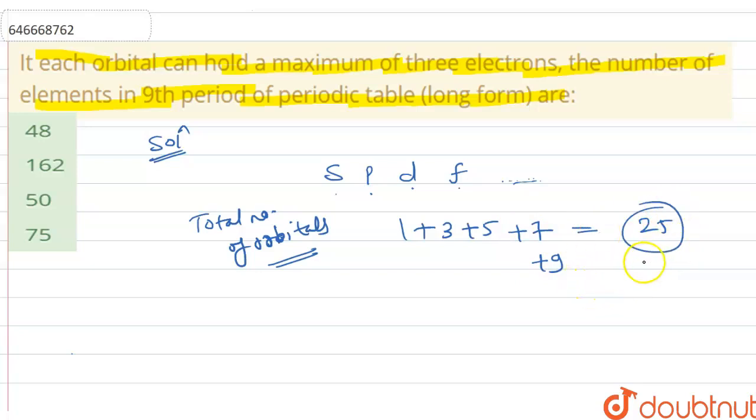And one orbital is having three electrons, so we have to find the total number of elements.